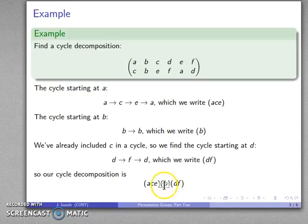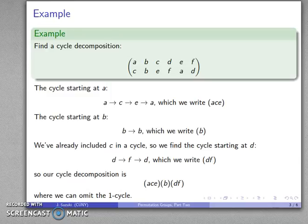I don't really need to include those one-cycles, so I'll omit them. It's not wrong to include them, but we can omit them. The important thing is that if we don't see an element listed, we can assume that element is unchanged.